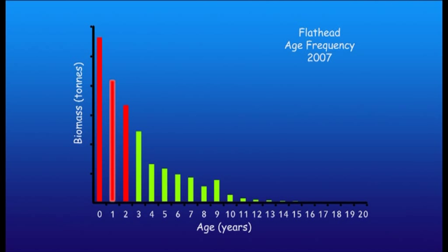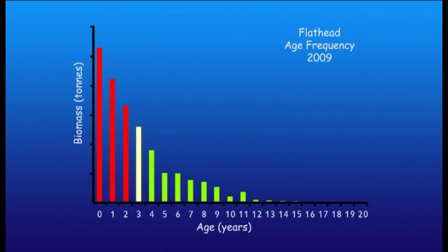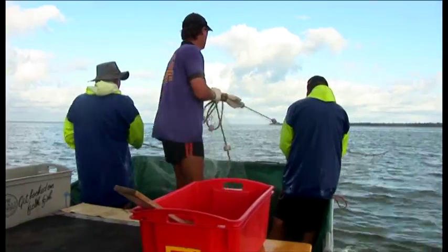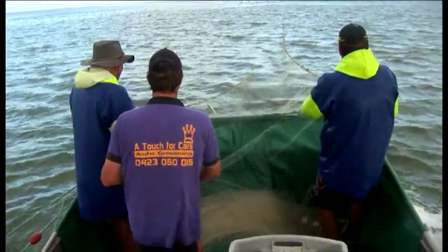Moving into 2007, our year-0 fish are now 1 year old and we have a new population of year-0 fish. As you can see, we have lost a few of the year-0 population through natural mortality. Moving into 2008, our original year-0 fish are now 2 years old and getting close to becoming recruits, and all the others have moved on a year and we have a new year-0 population. Now into 2009, our year-0 fish have graduated into the fishery. Recruitment levels are usually dependent on spawning stock biomass, and the recruits we see in 2009 were produced by the spawning stock biomass of 2005.